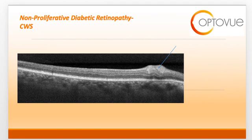This OCT shows a cotton wool spot. Remember that a cotton wool spot manifests as a result of a nerve fiber layer infarct. When you look at the OCT, you can see the hyperreflective area affecting the nerve fiber layer, thus manifesting as a cotton wool spot.